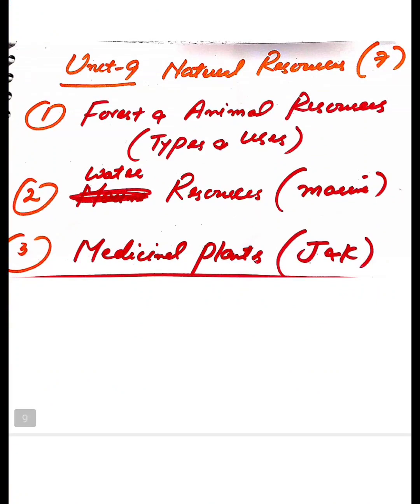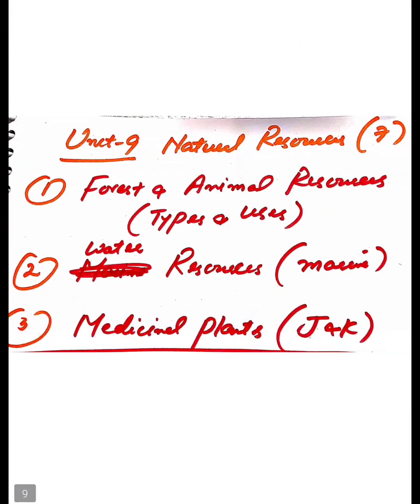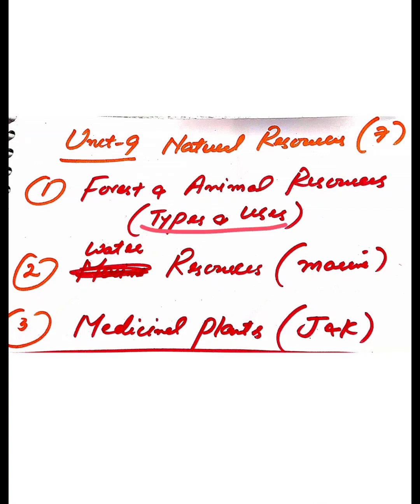Coming to one more unit, that is ninth unit. This may be 7 marks. That is Natural Resources. What are forest and animal resources? This may include types and uses. What are water resources? This may especially include marine water.